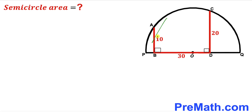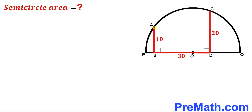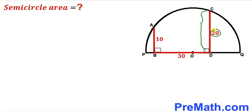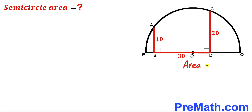Welcome to Pre-Math. In this video we have a semicircle with center O, along with two vertical segments AB and CD. As you can see in the diagram, BD is the horizontal segment. The AB segment length is 10 units, the CD segment length is 20 units, and the horizontal segment BD length is 30 units. Both angles at B and D are 90 degrees. Our task is to calculate the area of this semicircle.